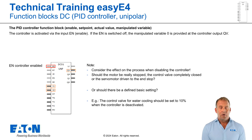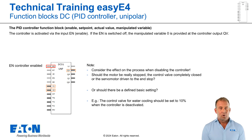The controller can be deactivated by the program via the input EN (enable). At the output QV, the manipulated variable is set to zero. But be careful — consider the impact this will have on the process. Should the motor be stopped, the control valve completely closed, the servo motor driven to the end stop, or should there be a defined basic setting? For example, the control valve for water cooling should be set to 10% when the controller is deactivated.